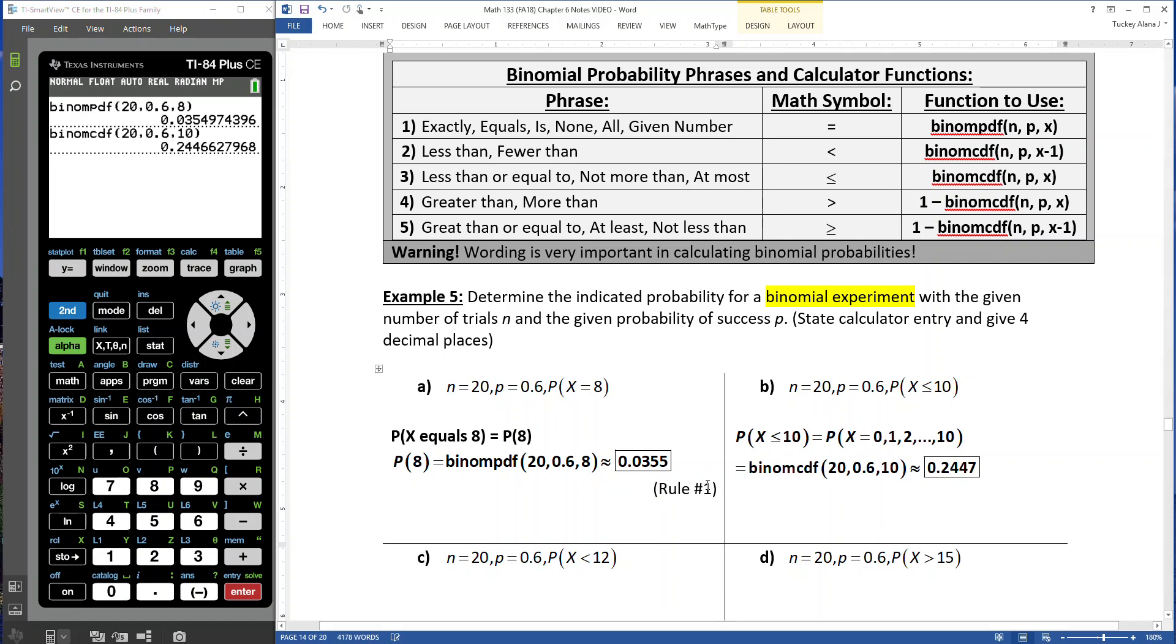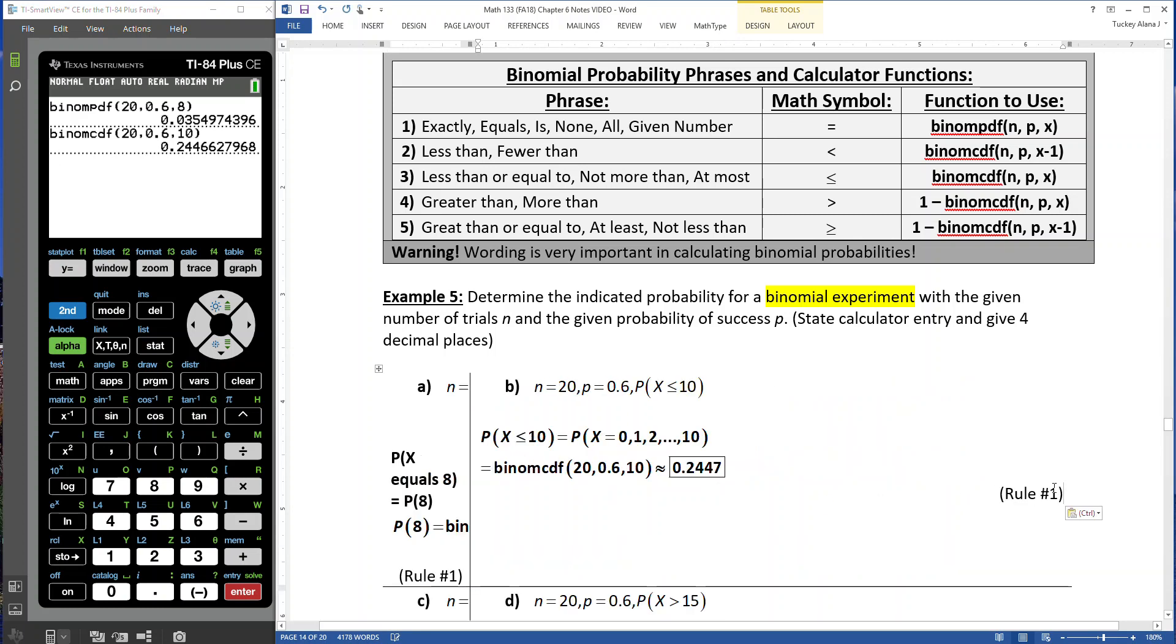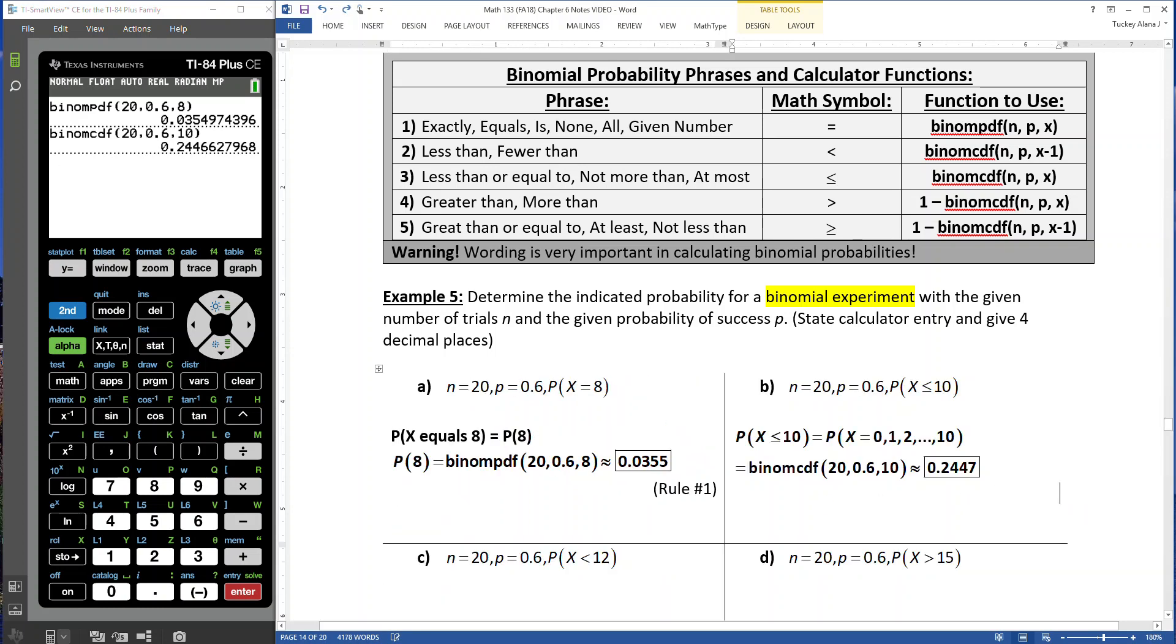So I'm going to use 10 right here and press paste. There we have it, 0.02477 using rule number 3.